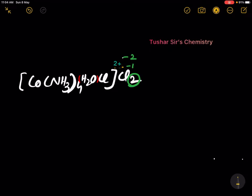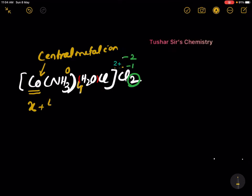We have to find the oxidation number of this central metal ion. Let it be X. For ammonia, the oxidation number is 0. As there are 4 ammonia ligands, I write 4 into 0. For water, the oxidation number is also 0. For chlorine, it is minus 1. For these 2 chlorine atoms, the oxidation number is minus 2.